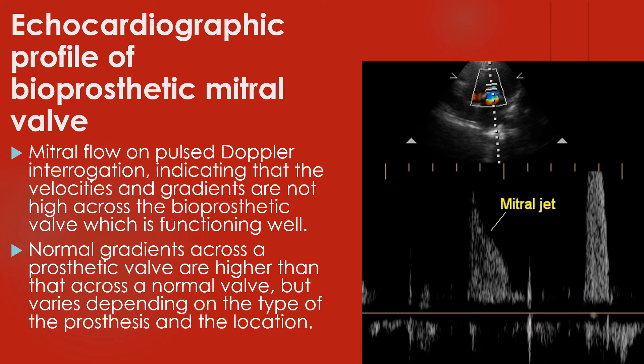Mitral flow on pulsed Doppler interrogation indicates that the velocities and gradients are not high across the bioprosthetic valve, which is functioning well. Normal gradients across a prosthetic valve are higher than those across a normal valve, but vary depending on the type of prosthesis and location. Prosthetic valves at the aortic position can have a higher gradient than at the mitral position, basically because of the smaller orifice size and the higher force with which the left ventricle ejects.